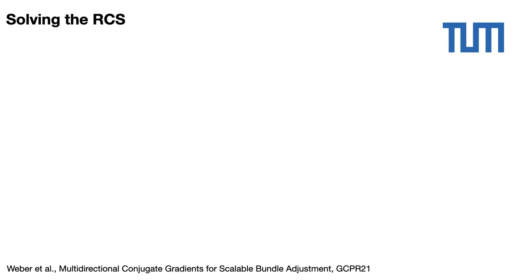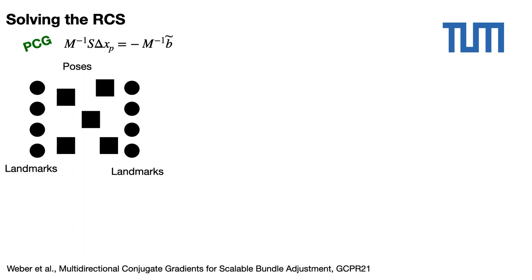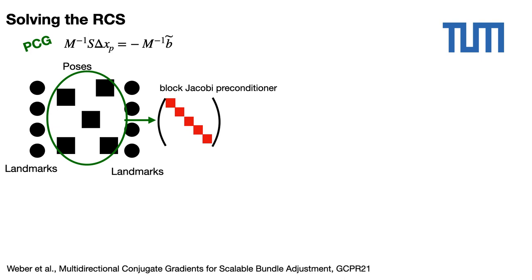Now, let's consider the reduced camera system. A very popular iterative solver for large symmetric positive definite systems is the conjugate gradients algorithm. To improve the convergence rate, it is common to use a preconditioner M, and the resulting algorithm is called preconditioned conjugate gradients. As the Schur matrix S is block-structured, a competitive preconditioner is the block-diagonal matrix composed by the block-diagonal elements of S, also called the block-Jacobi preconditioner.